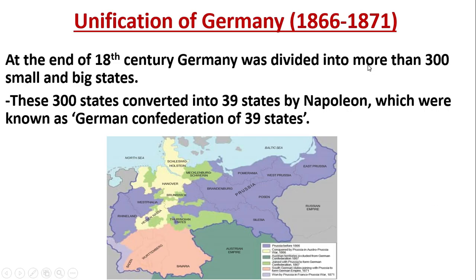In the 18th century, Germany was divided into 300 smaller states, and these smaller states had different countries within them. These 300 states were converted into 39 states by Napoleon, which were known as the German Confederation of 39 states.